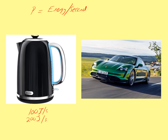The unit for power is watts (W). So 100 joules per second is 100 watts, and 200 joules per second is 200 watts. Power is energy per second — the more powerful the kettle, the more energy gets delivered every single second and the water boils quicker. A more powerful car will do your journey in a quicker time because every second you're transferring more energy.